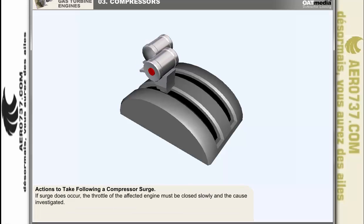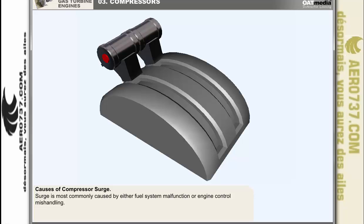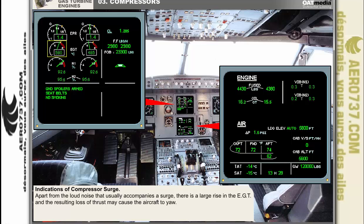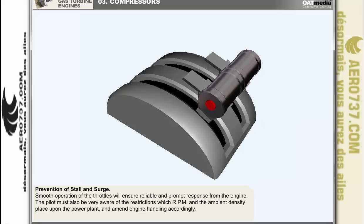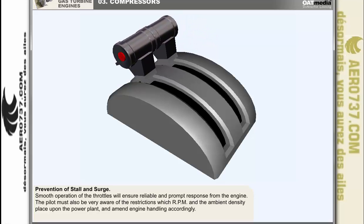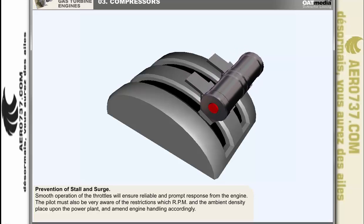If surge does occur, the throttle of the affected engine must be closed slowly and the cause investigated. Surge is most commonly caused by either fuel system malfunction or engine control mishandling. In extreme cases, surge could inflict such large bending stresses on the compressor rotor blades that they contact the stator blades with potentially catastrophic results. Apart from the loud noise, there is a large rise in EGT and the resulting loss of thrust may cause the aircraft to yaw. The pilot must always be conscious of the causes of stall or surge. Smooth operation of the throttles — both when advancing and retarding — will ensure reliable and prompt engine response.